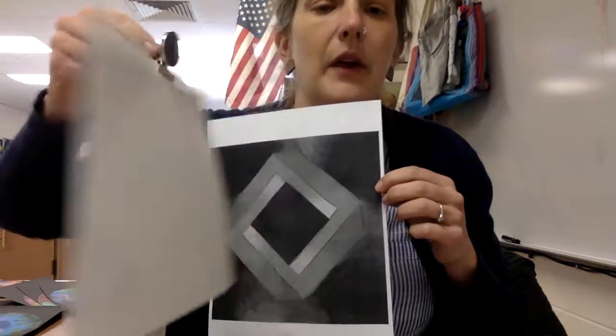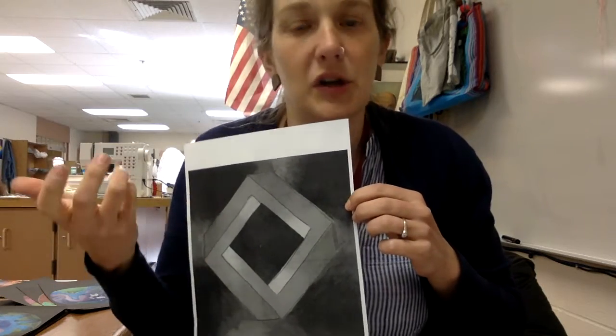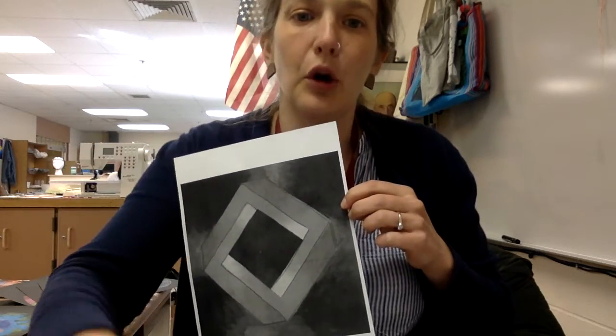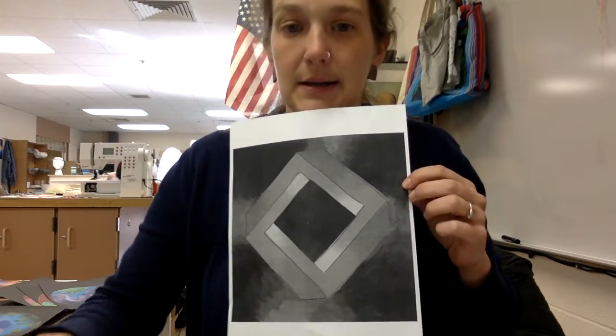Across the color wheel from a bluish color would be an orangey, so I'm going to do an orangey coral impossible shape. What you need to remember is the background actually fades from dark to light to dark to light.